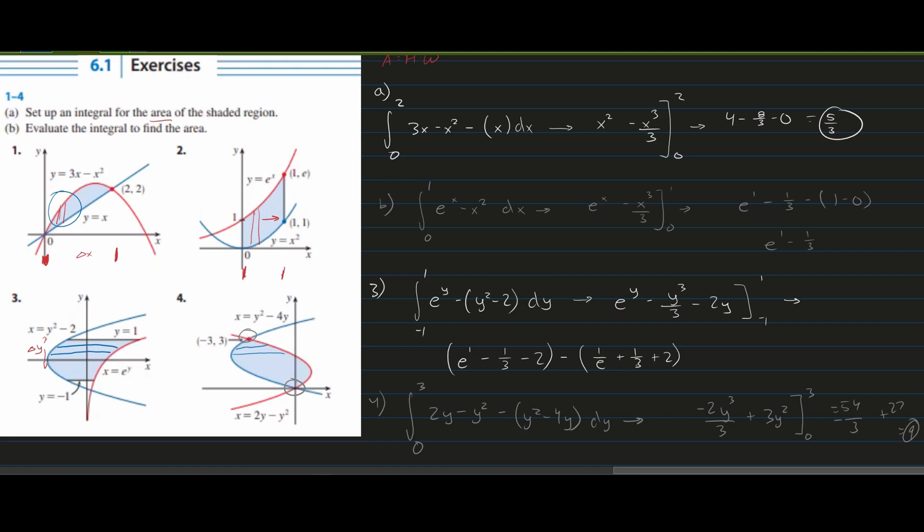Just like we've done previously, we have set up the integral for the area of the shaded region, we've evaluated the integral and we have found the area. That's how you would do 3 and 4 which is very similar to 1 and 2, we're just looking at it horizontally instead of vertically. Remember that when we do these we always want to check, first check which way we're going to do it. Is it going to be this way or this way?